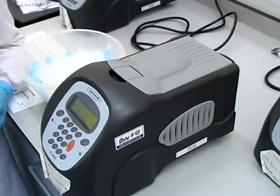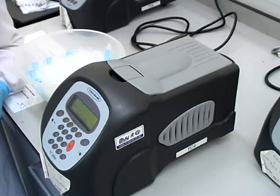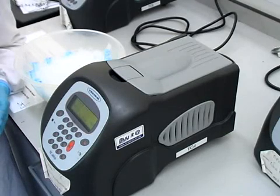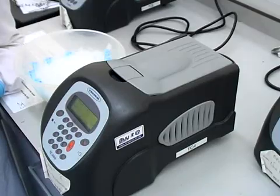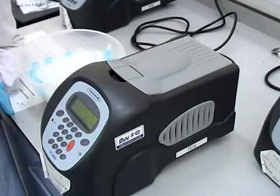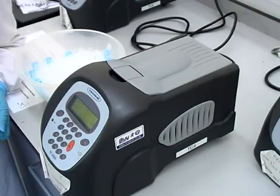The cycler heats again to 72 degrees C where the DNA polymerase amplifies the DNA. And then it is heated again to 95 degrees to denature the double-stranded DNA. This takes place over 30 cycles and the final extension is at 72 degrees C for five minutes.